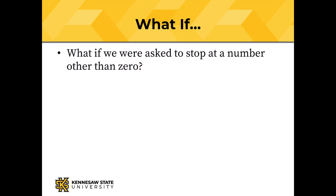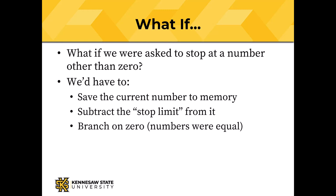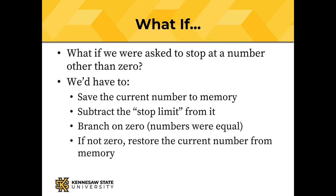Your assignment this term will be different — you might be asked to stop at a number other than zero. In that case, you'd have to save the current number to memory, subtract a stop limit from it — that's how you do a compare. You subtract numbers and branch on zero: if there was a zero, those numbers were equal. But if they weren't equal, you have to restore the current number from wherever you stored it in memory.